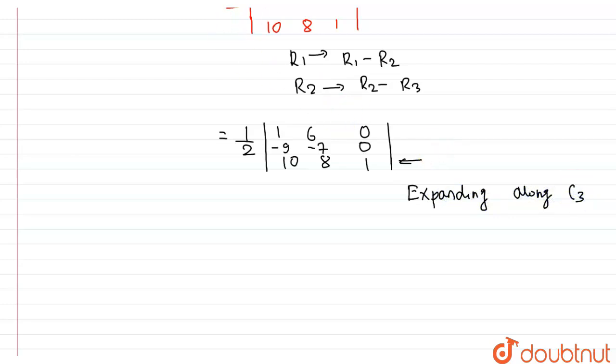So now I can write the given value as this one is half of the given determinant. I can take from this one, so this one is 1, 6, minus 9, and minus 7. Clear up to now students? This one is 1.